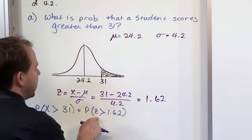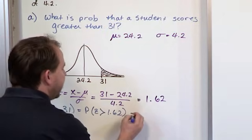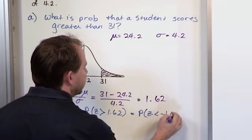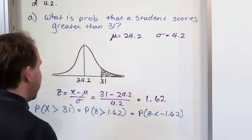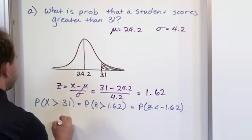Now, we cannot read areas greater than z off of that table. We have to change it, as we've been doing in the past, to z being less than negative 1.62. And we've explained why in the past. And so, whenever you look that up, you will find that the probability...